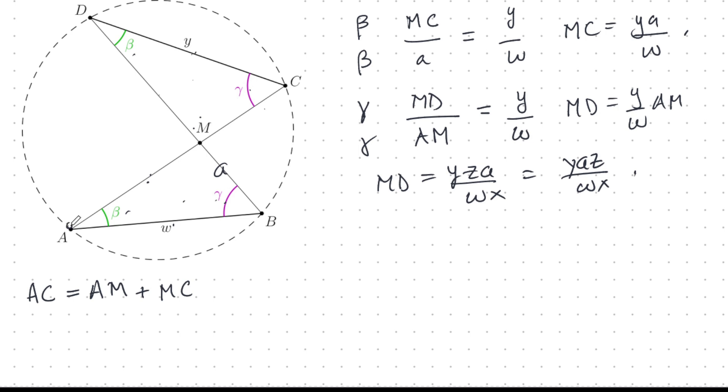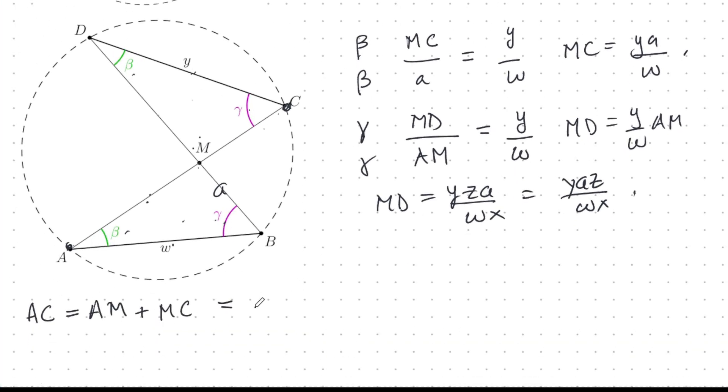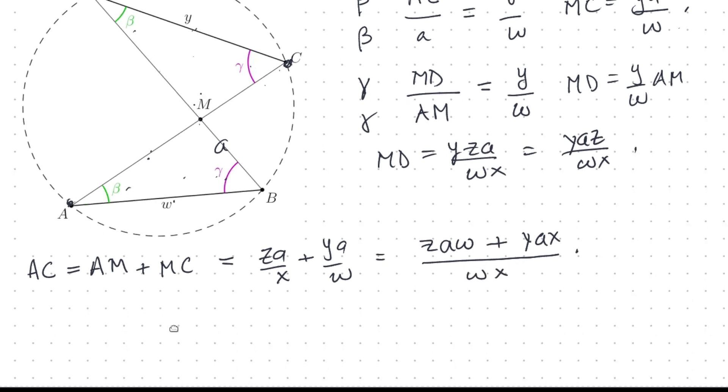First, we'll try to find A up to C. So that's two pieces: AM plus MC. And we know these pieces. What was AM again? Let's go back up here. That's z times a over x. And what was MC? We found that here. That's y times a over w. And cross multiply. We get z. Let's write it in a way we can pronounce: z times w times a plus y times x times a over wx. Like that. So we've got that. Very nice.